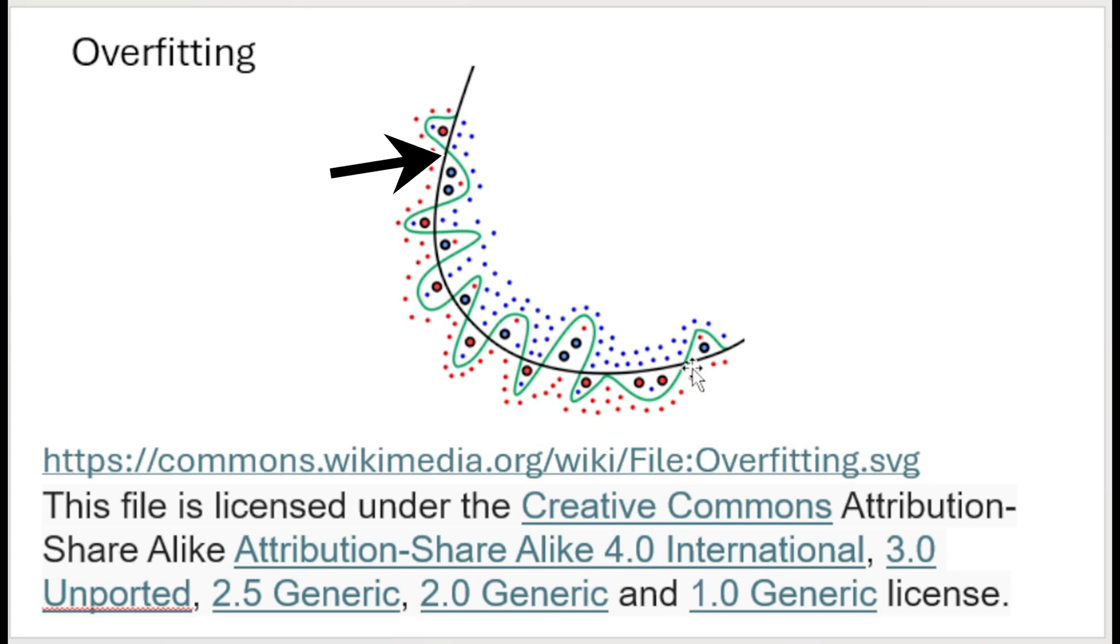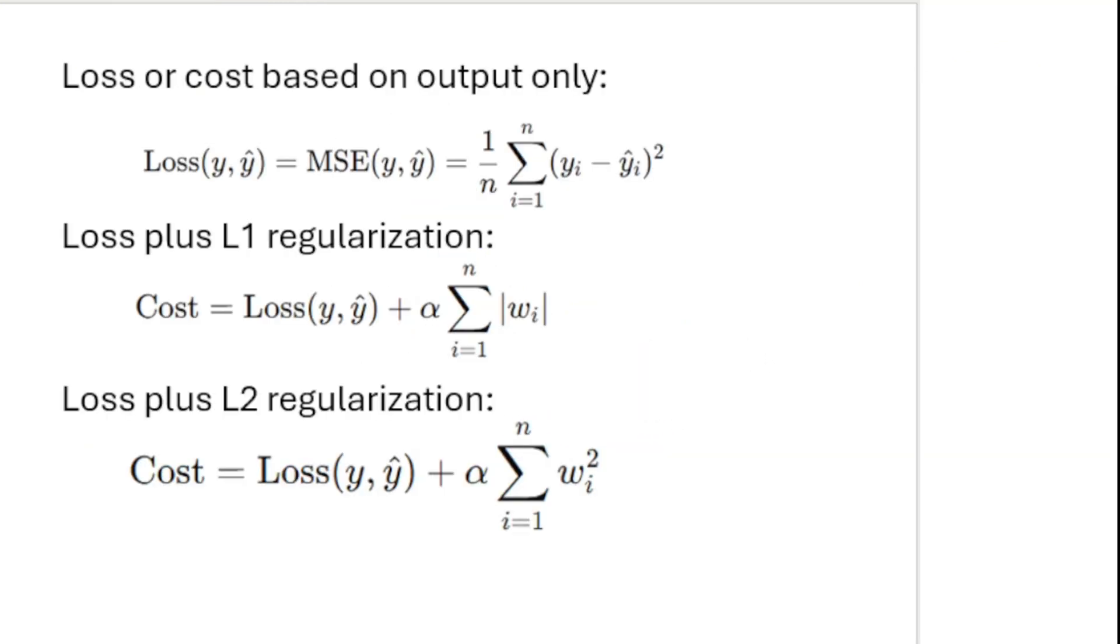In contrast, the black line illustrates a regularized model where overfitting was handled. It is not entirely following the training data, but it is likely to perform better on unseen data due to its generalization capability.